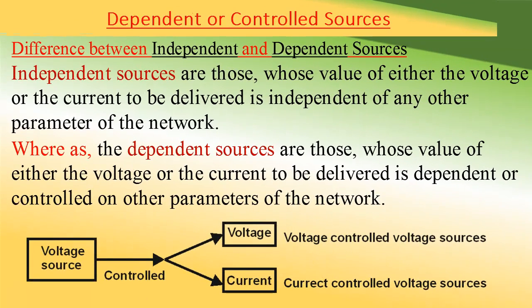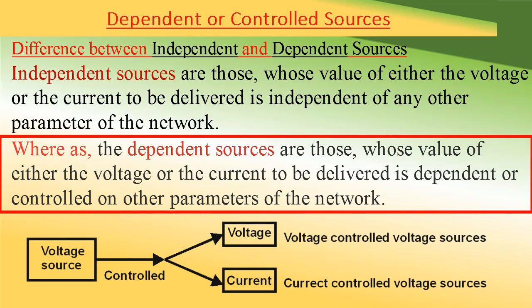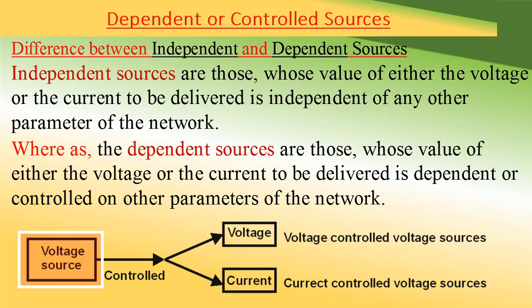As I discussed earlier, sources could either be independent sources or dependent sources. Dependent sources are also called controlled sources. An independent voltage or current source is one whose magnitude of voltage or current to be delivered is entirely independent of any other parameter of the network. For example, a voltage source could be controlled either by the voltage across any element or branch of a network.